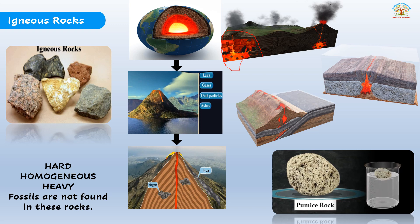Sometimes this material gets released through the fissures in the crust - fissures are cracks that exert pressure, occurring normally in the earth's crust. When this comes up with high pressure or intensity, it creates a volcano. Lava, gases, dust, ashes, etc. are thrown out during volcanic eruptions. When the molten material known as magma within the crust and lava which comes out of the crust solidifies and gives rise to rocks, these rocks are known as igneous rocks. As these rocks are formed out of material from the interior of the earth, they are also called primary rocks.